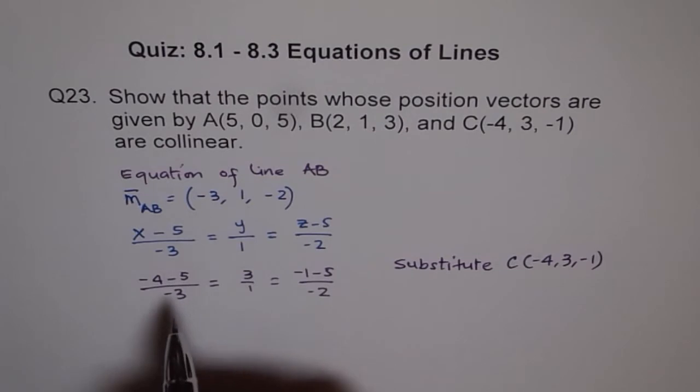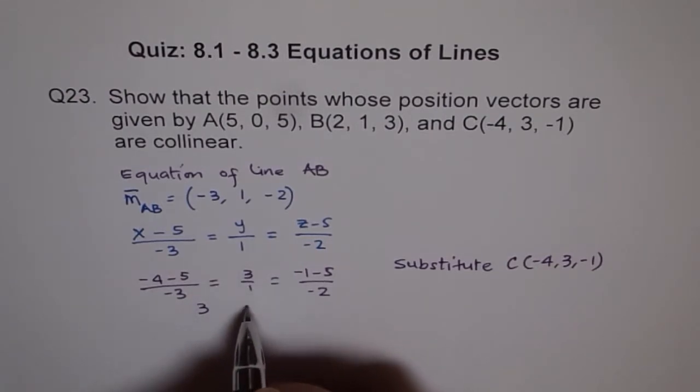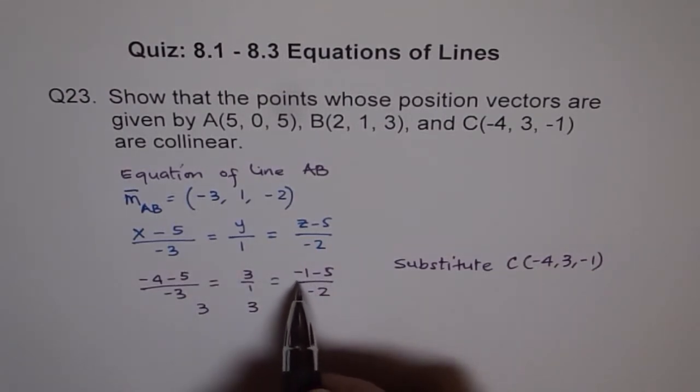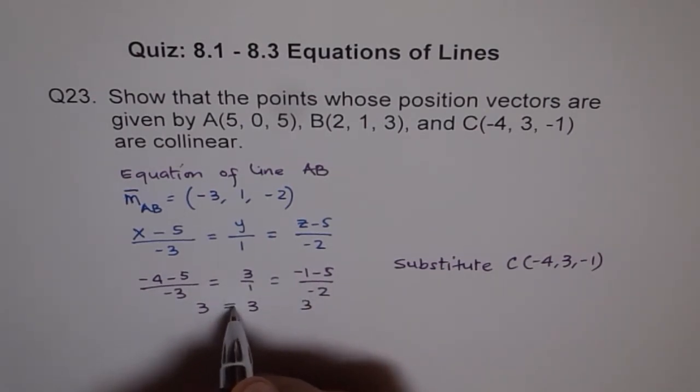Now, once we do it, we get minus 4 minus 5 is minus 9. Minus 9 divided by minus 3 is plus 3. So we get 3. Here, we already have 3, and here we get minus 1 minus 5 is minus 6. Minus 6 divided by minus 2 is also 3. Do you see that? All are equal.